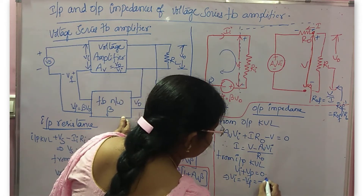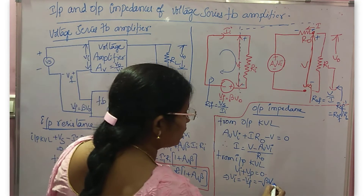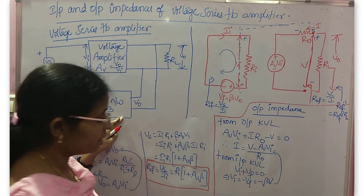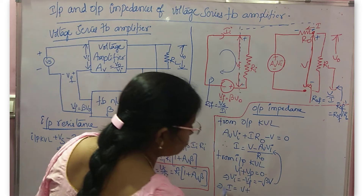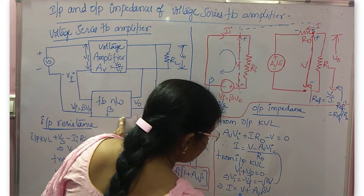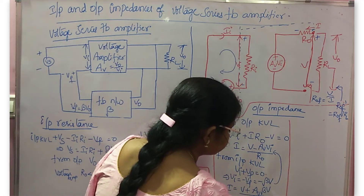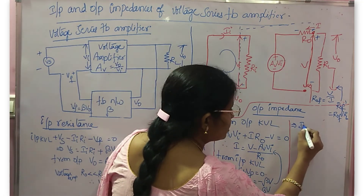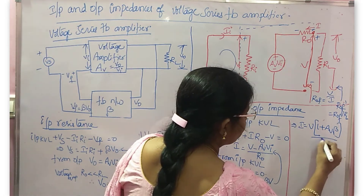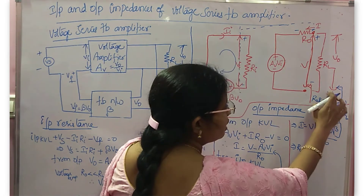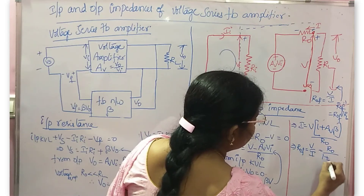What is minus VF? It is minus beta·V0, but instead of V0 you must take V. So substitute this: I equals V, and this minus times minus becomes plus Av·beta·V, all divided by R0. Take V common: I equals V times (1 plus Av·beta) divided by R0. So R0F equals V by I, which gives R0 divided by (1 plus Av·beta).